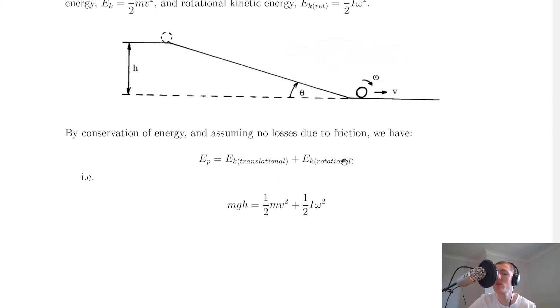So we can say that EP = EK_translational + EK_rotational, and if we wanted to replace those expressions with the actual equations, then we've got mgh = (1/2)mv² + (1/2)Iω². And you might see a question asking you to calculate, say, the linear speed at the bottom of the slope, or say, the angular speed of the object at the bottom of the slope, depending on which information you're given in the question.